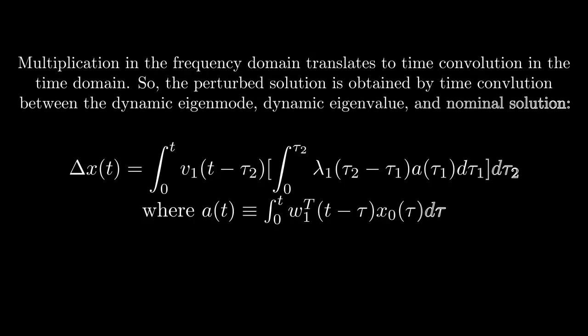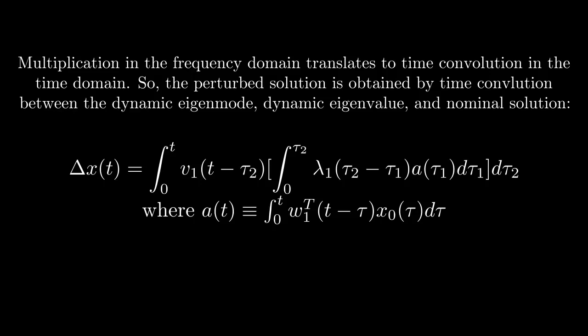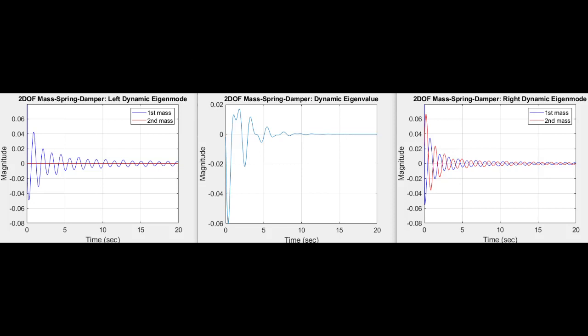Multiplication in the frequency domain is convolution in the time domain, so we may obtain our time domain system response by a time convolution between dynamic eigenmode, dynamic eigenvalue, and the nominal solution. For the two degree of freedom mass spring damper system with changing spring stiffness on spring number one, we can account for parameter variation with the result of this convolution. The left and right dynamic eigenvectors we see give these waveforms which change accordingly to the parameters. Eigenvalues in the middle show a very irregular waveform corresponding to the changing dynamic eigenvalues with respect to the parameter variation.